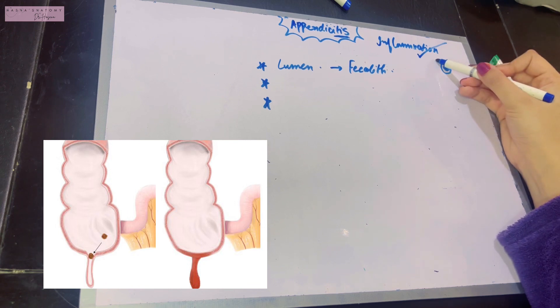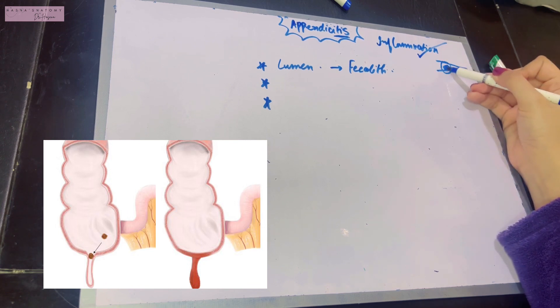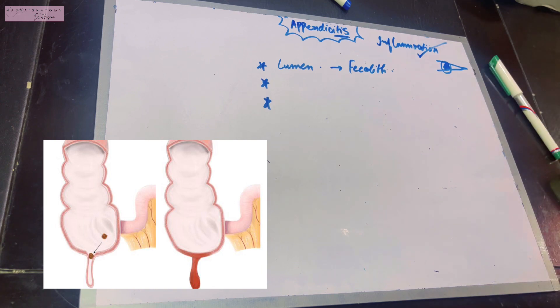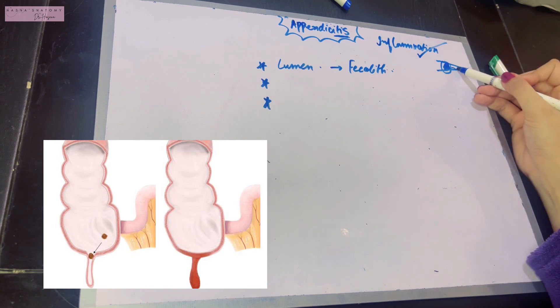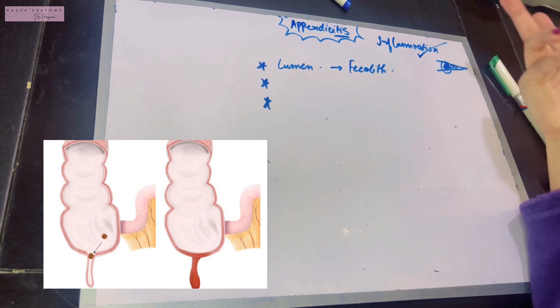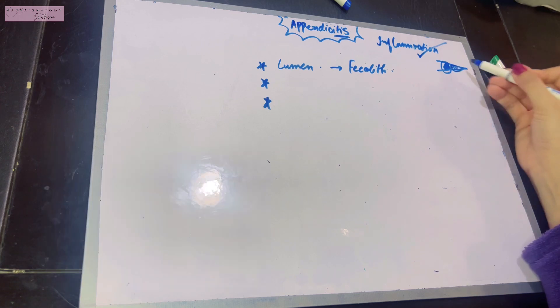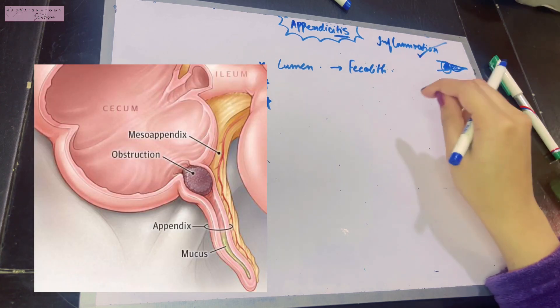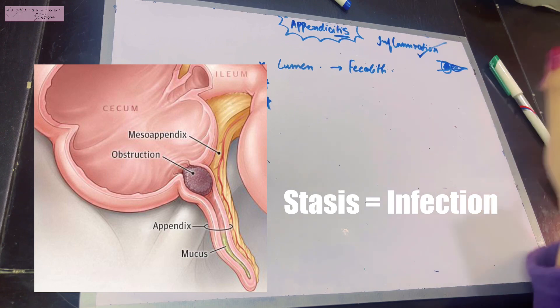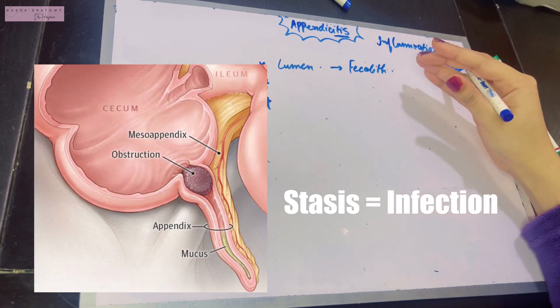If the lumen is very narrow, this hardening can cause obstruction of the lumen. When the lumen is obstructed, all the secretions of the appendix stay within it. Always remember, any site of stasis in your body leads to infection, resulting in inflammation. This is the first factor contributing to appendicitis.